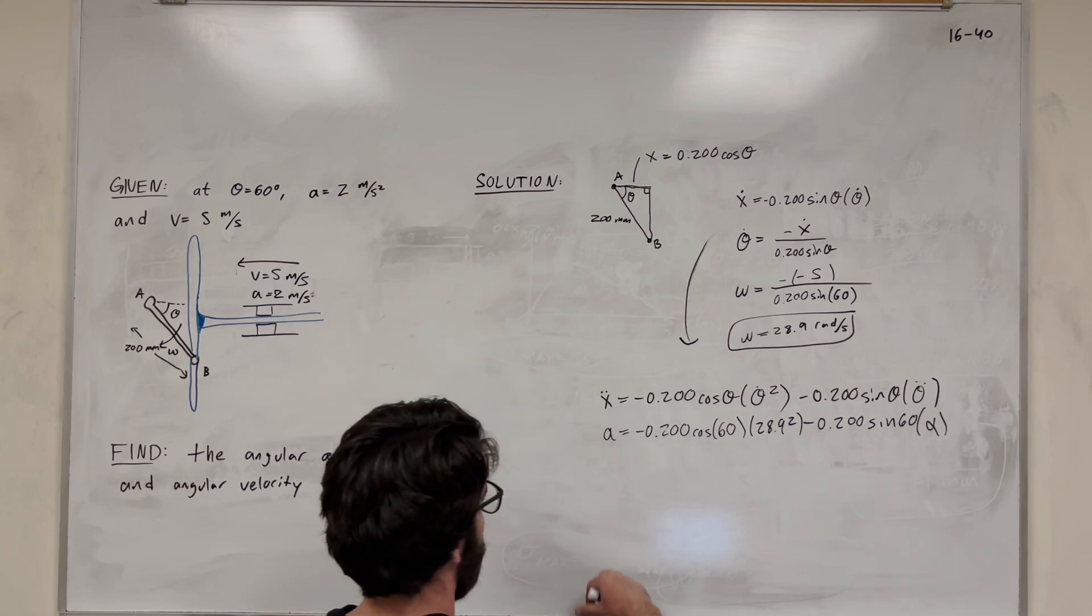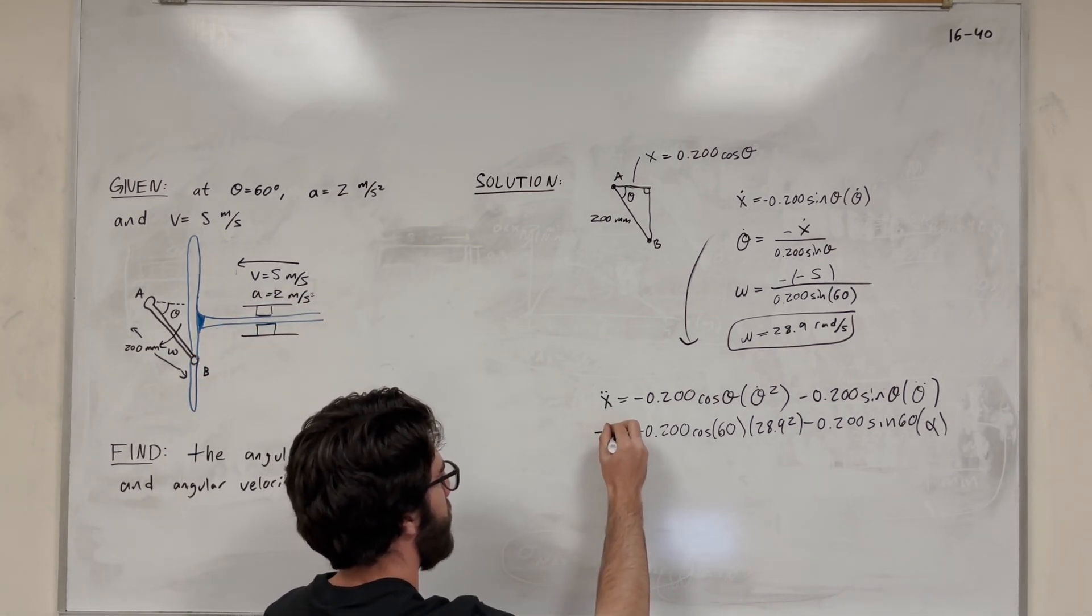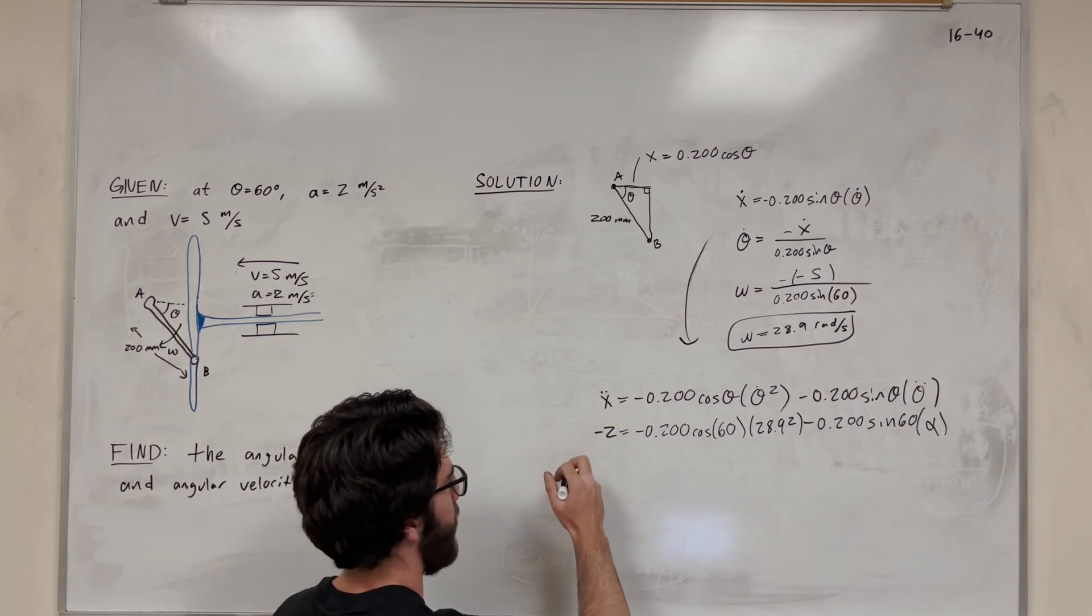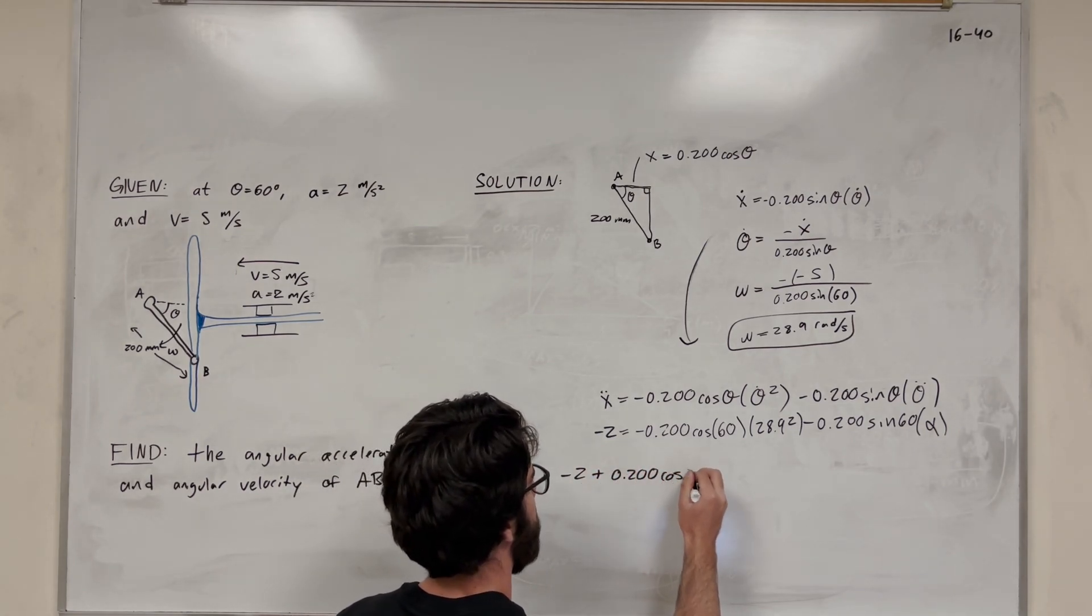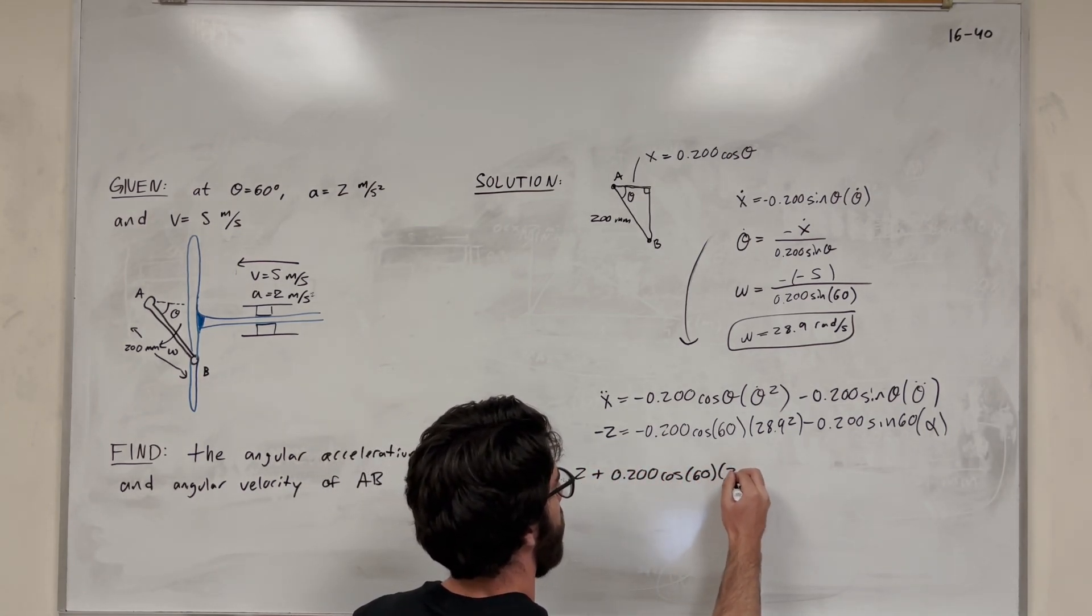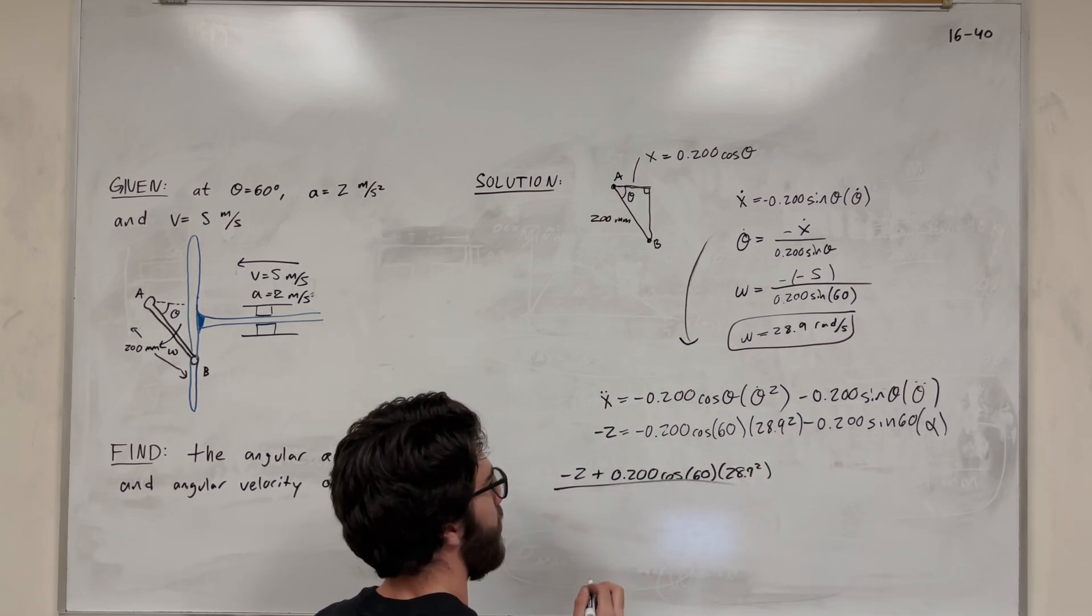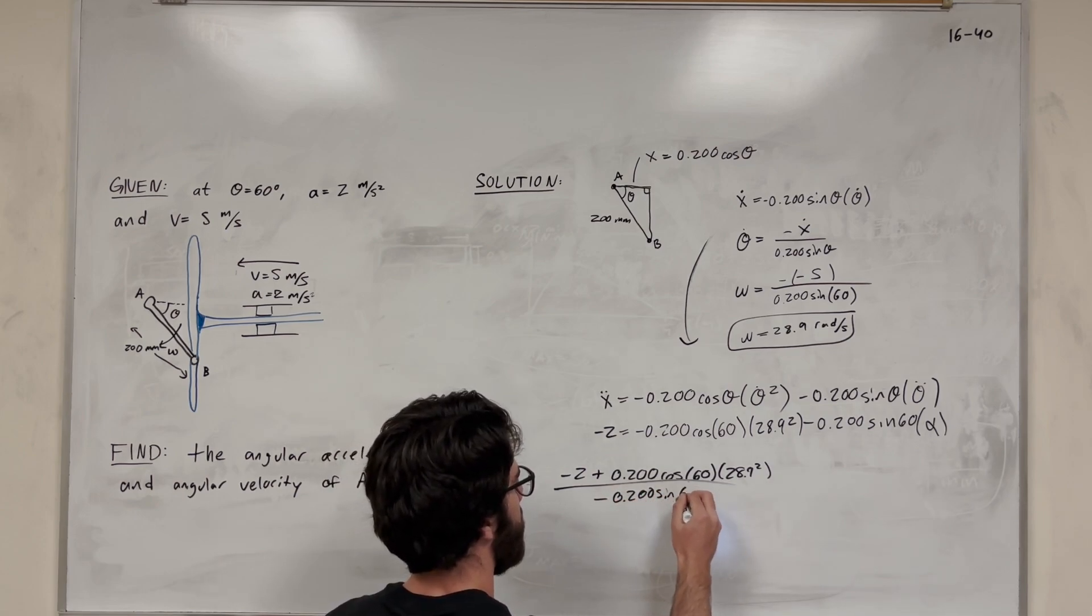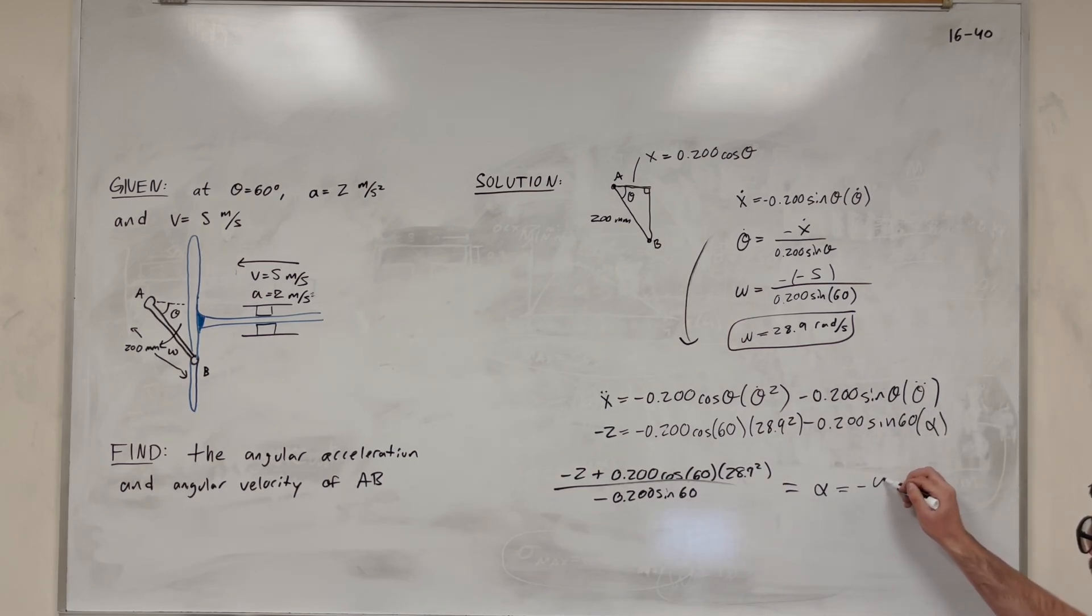So what's going to happen now is our acceleration. Let's plug in what acceleration is. We're accelerating to the left. So this is going to become a negative 2. So then what we're going to do is we're going to move this over. And you're going to get negative 2 plus 0.200 cosine of 60. And then 28.9 squared. Now we're going to divide by everything else over here. So this is going to become a negative again. 0.200 sine of 60. And this is all going to be equal to our angular acceleration. And if you solve that, you get negative 470 radians per second squared.